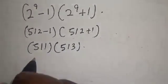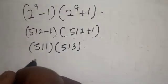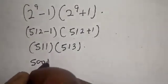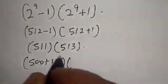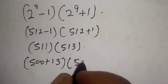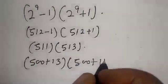Now this is the same thing in the next step. 513 is 500 plus 13, multiply by 511 is 500 plus 11.